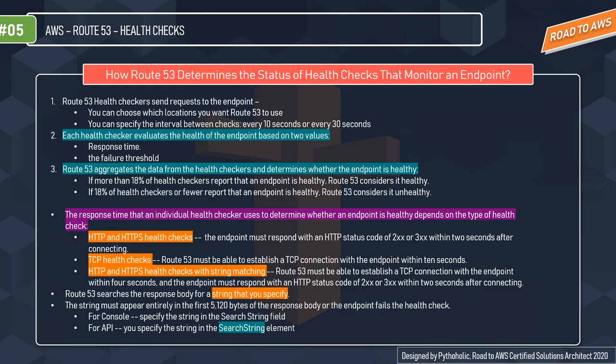Each health checker evaluates the health of each endpoint based on two values. The first is the response time — whether the endpoint responds within the expected time. The second is the failure threshold — whether the endpoint responds to a number of consecutive health checks that you specify. For example, if you set it at five, it will check five times before confirming the threshold has been reached and mark it as failed.